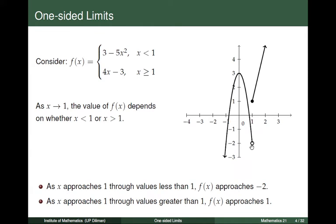We can see that from this graph: when x is very close to 1 but less than 1, the corresponding functional value is very close to negative 2. On the other hand, if x is approaching 1 through values greater than 1, f(x) approaches 1. We are looking at x values greater than 1, and we see that the corresponding functional value is very close to 1.